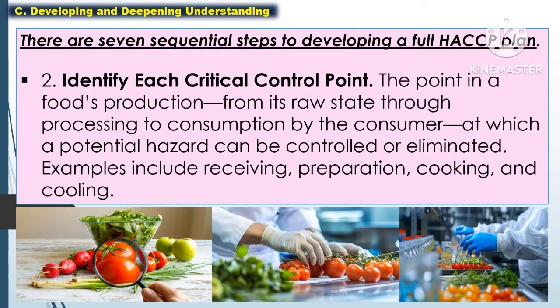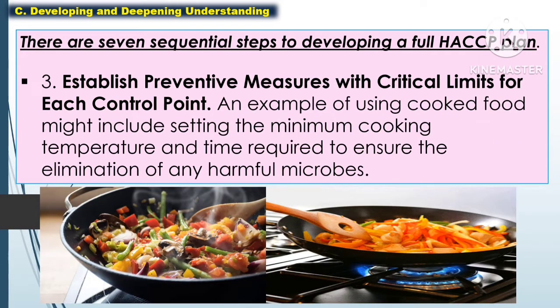The second step is to identify each critical control point — the point in food production from its raw state through processing to consuming by the consumer, at which a potential hazard can be controlled or eliminated. Examples include receiving, preparation, cooking, and cooling.